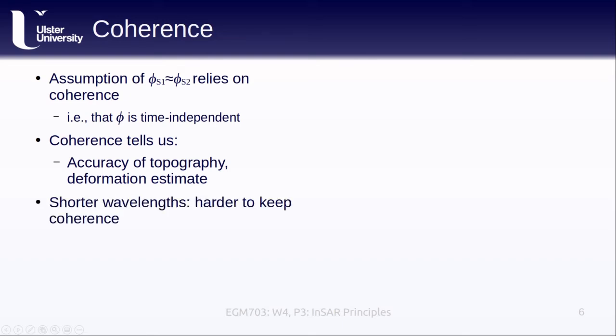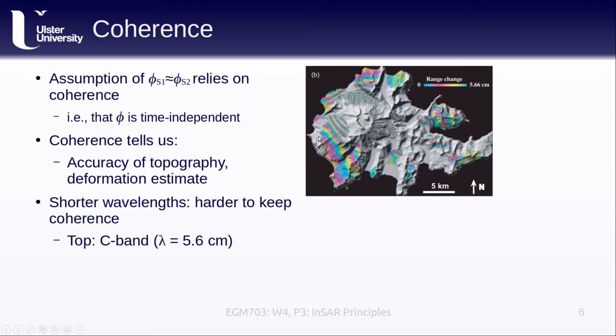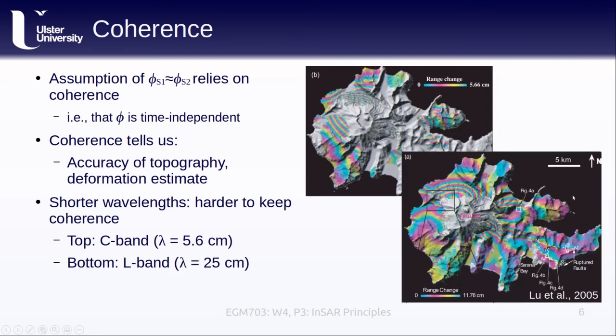With shorter wavelengths, it tends to be harder to keep coherence between images. In the example here, anywhere that we have high coherence, we see the interferometric fringes. Anywhere that we see gray, we have low coherence. So this example shows an interferogram derived from C-band radar, which has a wavelength of 5.6 centimeters. The wavelength down here, the second image, is for an L-band radar, which has a wavelength closer to 25 centimeters. And you can see how much more complete the fringes are. We have significantly better coverage of the interferogram for the longer wavelength than we do for the shorter wavelength.